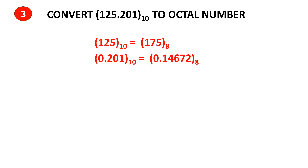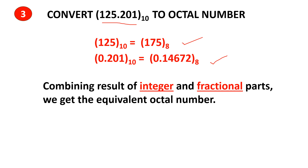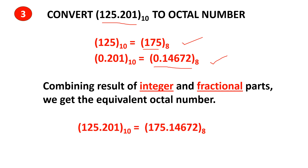We now have the octal equivalent for 125 and the octal equivalent for 0.201. To find the octal number for the complete number 125.201, we combine the results of the integer and fractional parts. The final answer is the octal equivalent of decimal 125.201, which is 175.1472.